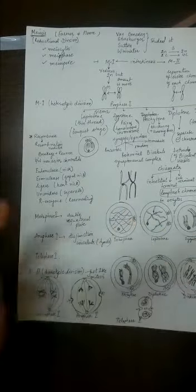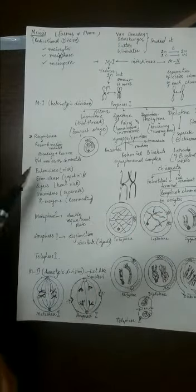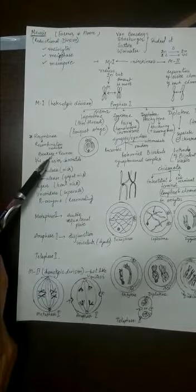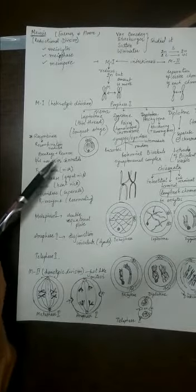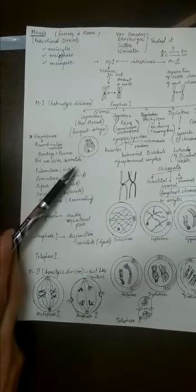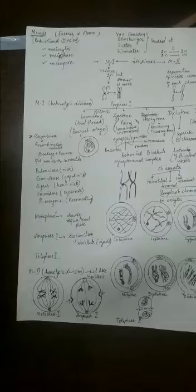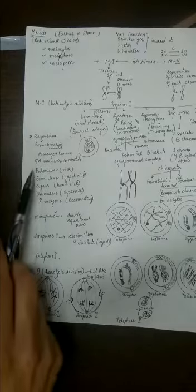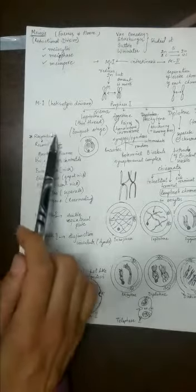To start this process of crossing over, first breakage is required, then reunion is required between two non-sister chromatids. For all this process, a large number of enzymes are required. I have mentioned these enzyme names here, and NCERT only mentions this much.